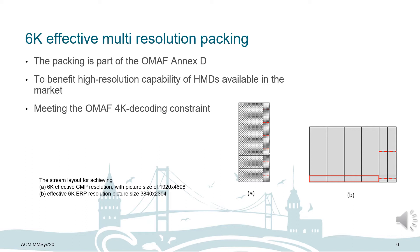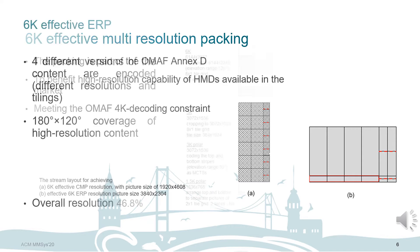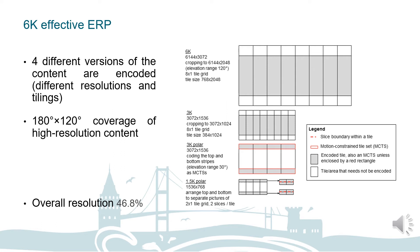For the 6K effective ERP packing, to realize MCTS-based 6K effective packing, four different versions of content are encoded with different resolutions and tiling. The viewport area is encoded in 6K while the non-viewport is encoded in 3K resolution. The polar area is selected from 30 degrees at the top and bottom of the ERP content and is encoded at 3K and 1.5K resolution for viewport and non-viewport parts respectively. The coverage of high-resolution content is 180×120 degrees, and overall the packing is 46.8% of the original resolution.